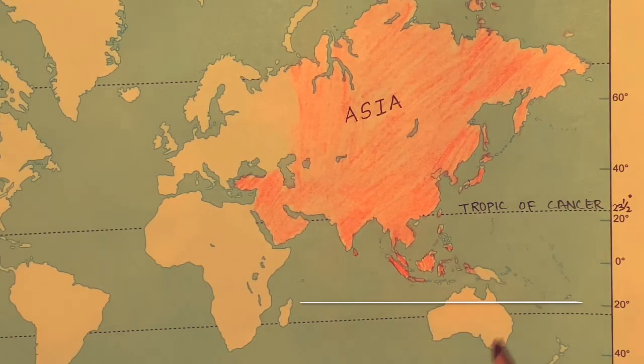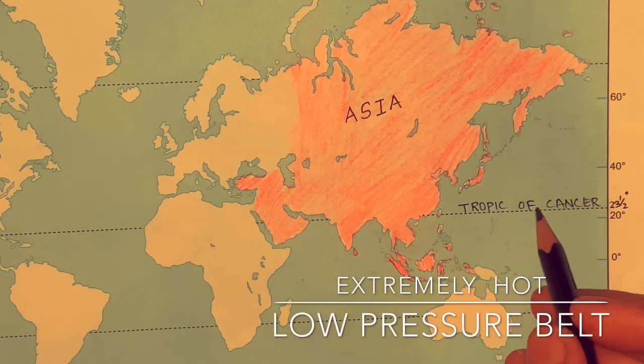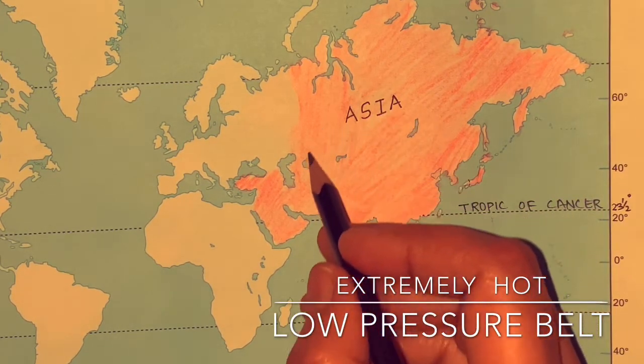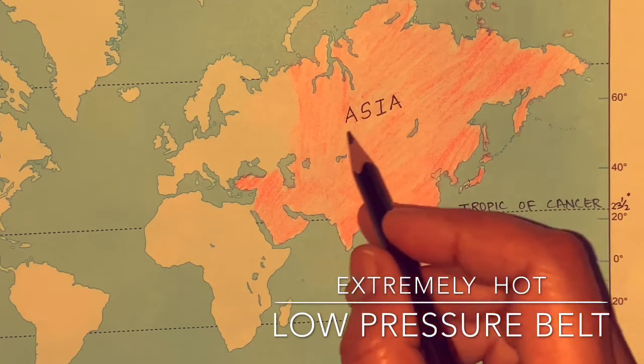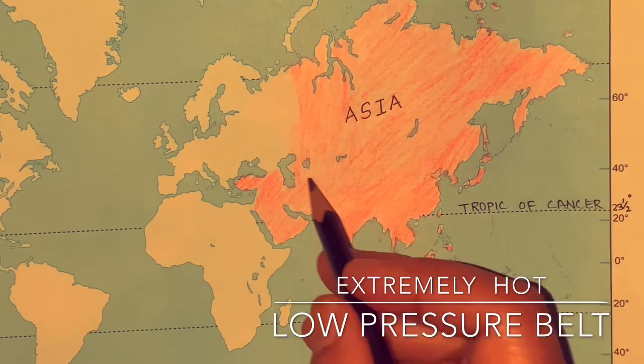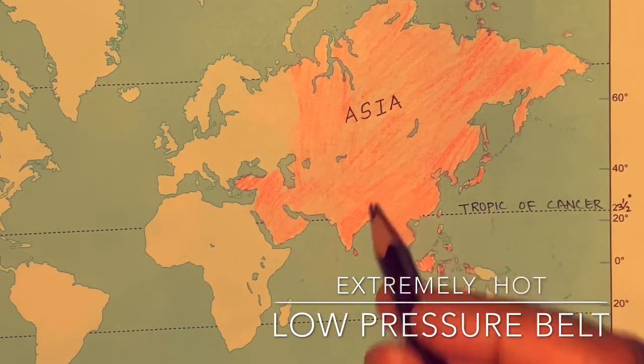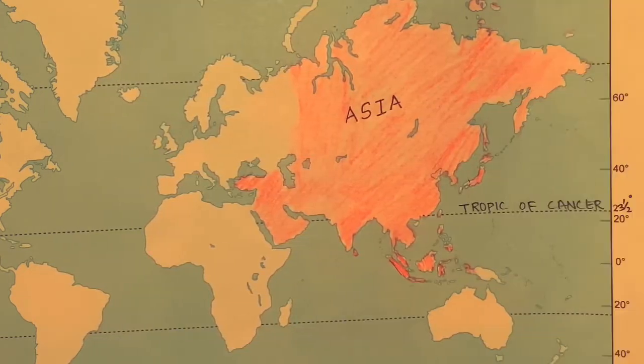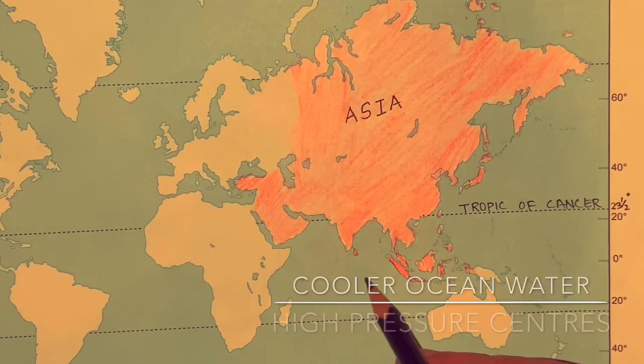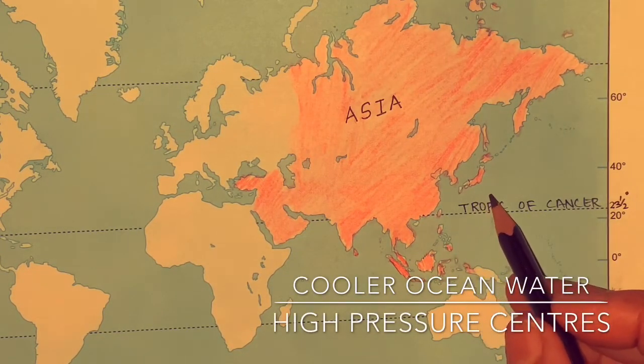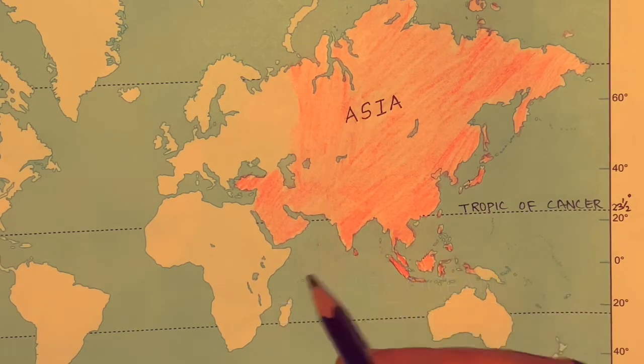Hello friends. In this video we will learn about the climate of Asia. In summer, as the Sun shines directly above the Tropic of Cancer, the interior parts of Asia become extremely hot and a low pressure belt develops there. Just opposite, as the water of the ocean is cooler, they are centers of high pressure.